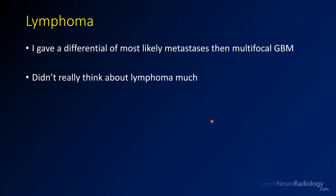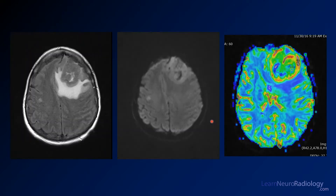You're not always going to be correct. Looking back at the imaging signs: the mass is relatively hypointense on T2, which is a nice sign for lymphoma. It's also pretty bright on DWI — another nice sign for lymphoma. On perfusion imaging, it's an extraordinarily avid lesion.